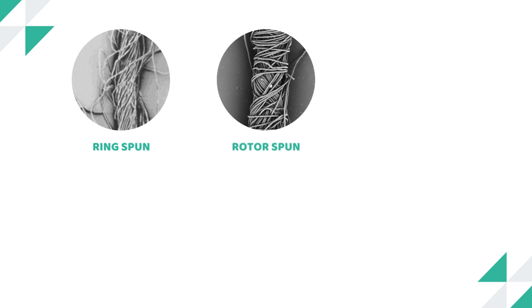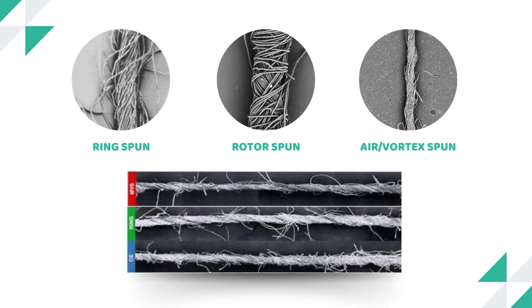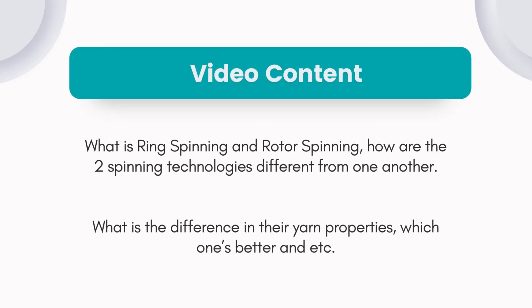There are two most prevalent spinning technologies in the spinning market right now: ring spun yarn and open end rotor spun yarn. There is also a third one, which is vortex or air spun yarn, which we'll discuss in the next coming videos. Today I'll be talking about what is ring spinning and rotor spinning, how the two technologies differ, the difference in yarn properties, which one is better, and so on. This is extremely important as it is a very frequent exam question and you should have a basic overview of both. Let's begin.